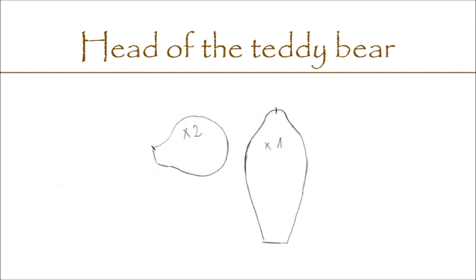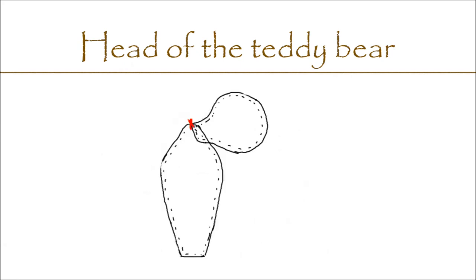The teddy bear head consists of three parts: two sides and top of the head. To sew the sides, on the corner I mark the places we are to connect and we sew together along these lines.